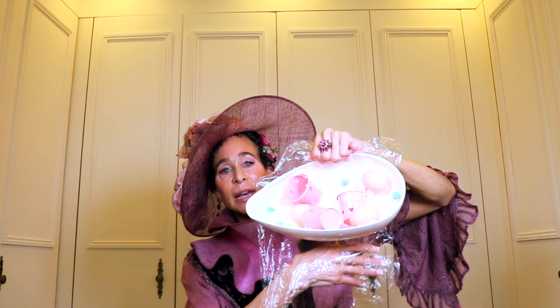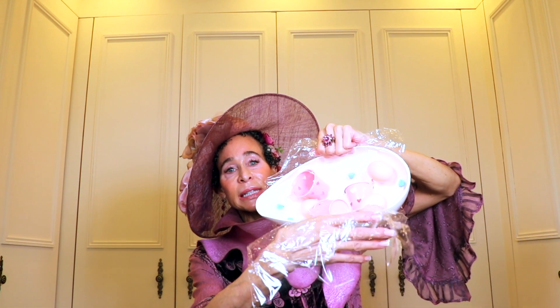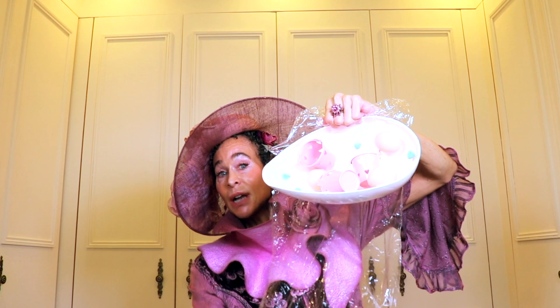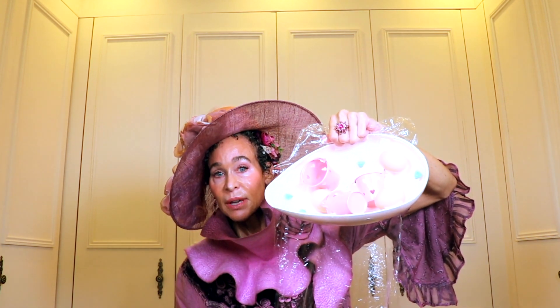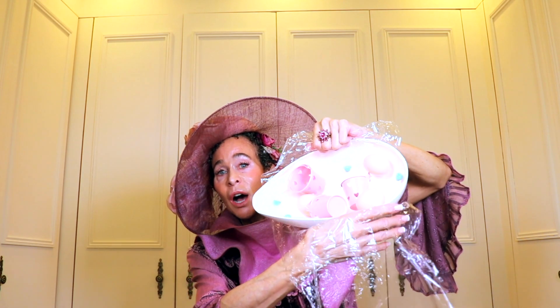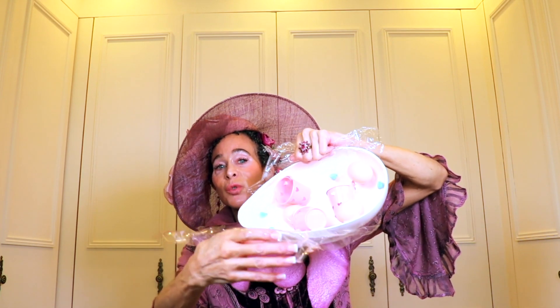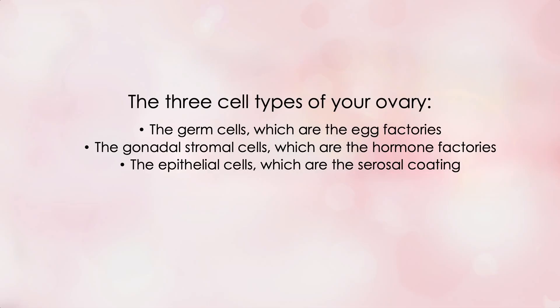The serosa coats all around the outside of your ovary, and in addition to that it also extends to all the other organs in your pelvis — it is not unique to your ovaries. And voilà, there you have the three cell types of your ovary: the germ cells, which are the egg factories; the gonadal stromal cells, which are the hormone factories; and the epithelial cells, which are the serosal coating.